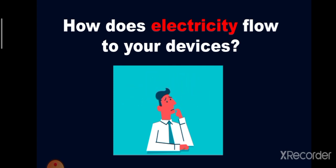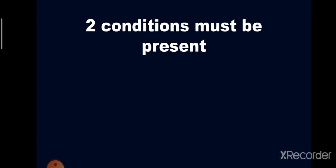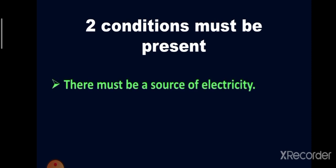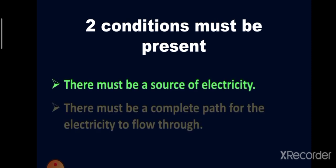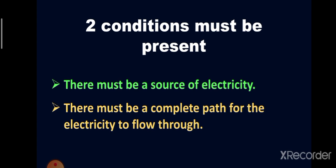There are two conditions that must be present for electricity to flow. First, there must be a source of electricity. Second, there must be a complete path for the electricity to flow through.